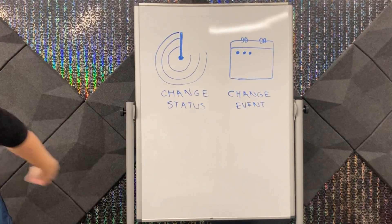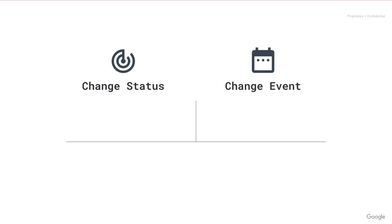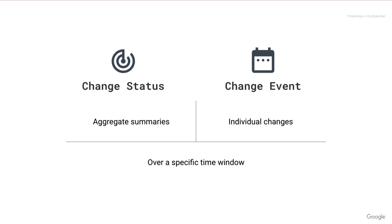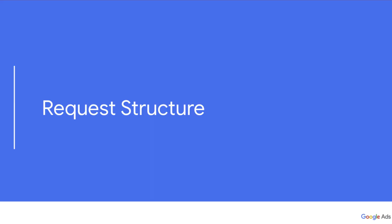Back to the slides. Change Status offers aggregate summaries, while Change Event exposes each change individually. Both of these services operate over a specific window of time that you must specify for each request. And speaking of requests — request structure.